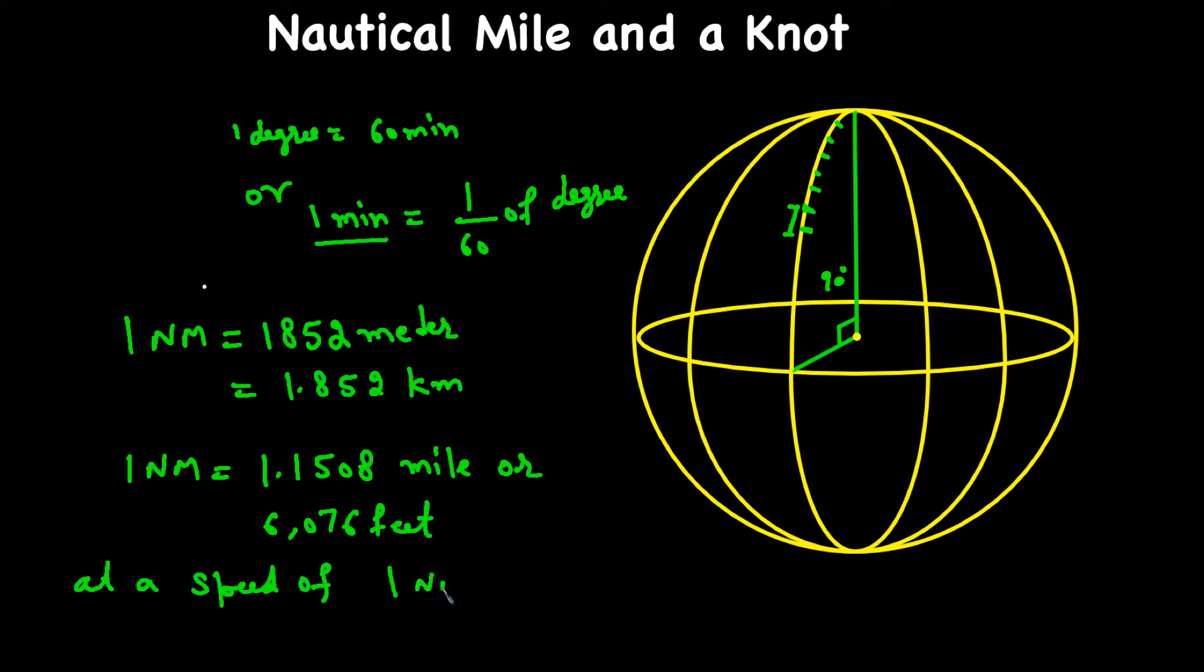...one nautical mile per hour, then you are basically traveling at a speed of one knot. So that's the definition of speed in terms of nautical miles. One nautical mile per hour is called one knot.